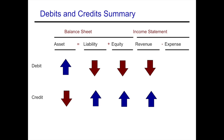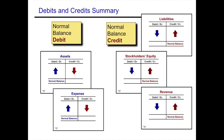As revenues go up, equity goes up. Expenses will increase with debits and decrease with credits, so as expenses increase, equity will decrease. When discussing normal balances: assets carry a normal debit balance, as do expenses. Accounts that carry a normal credit balance would be your liabilities, your stockholders' equity accounts, and your revenue accounts.